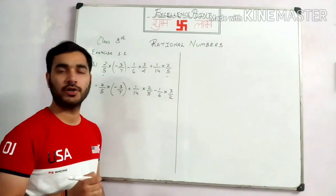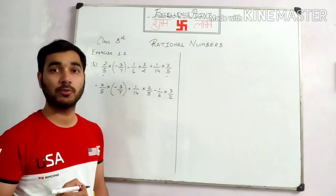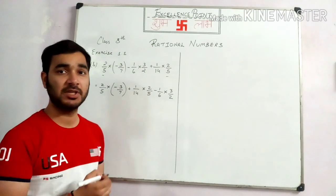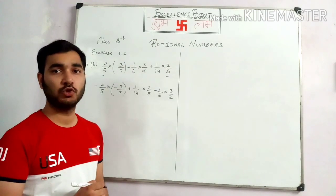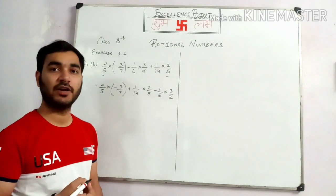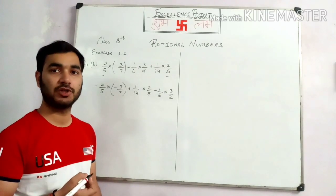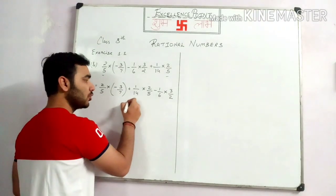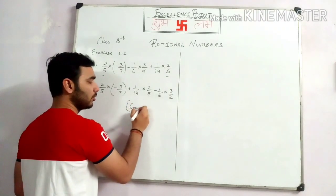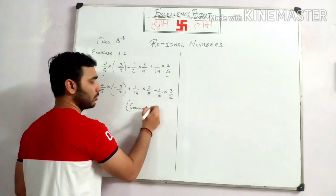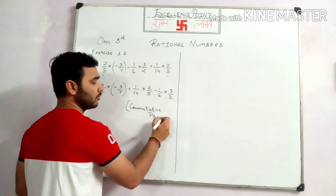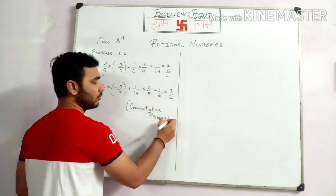Students, we already know that we have applied the property which is called the commutative property, which says that A plus B is equal to B plus A. So over there we have to write and mention that we have used the commutative property.